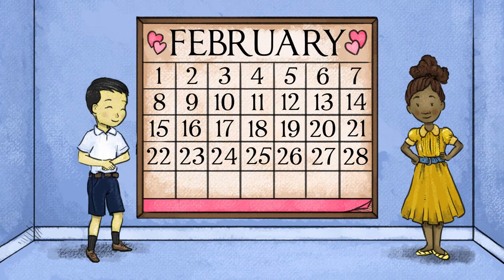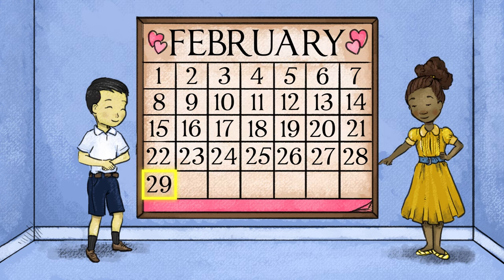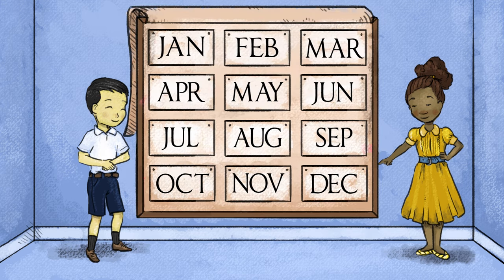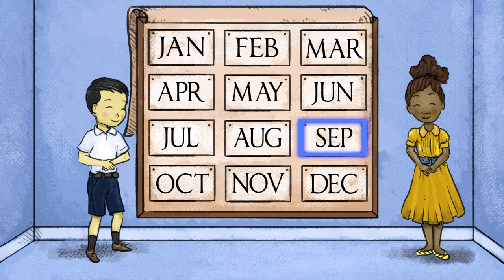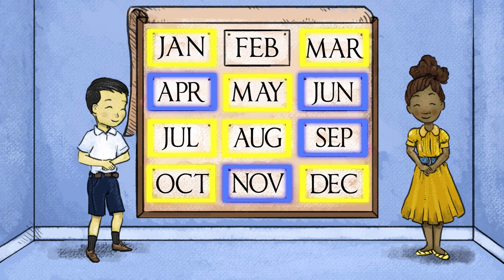How many days are in each month, it's clear. February has 28, but 29 each leap year. 30 days have September, April, June, and November. The rest have 31.